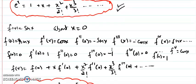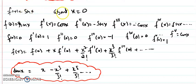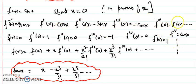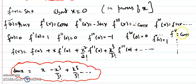Similarly, for the trigonometric sine function: f(x) equals sin x, f'(x) equals cos x, f''(x) equals minus sin x, f'''(x) equals minus cos x, and the fourth derivative is plus sin x, and so on. When we plug in x equals 0, f(0) equals 0, f'(0) equals 1 (since cos 0 is 1), f''(0) equals 0, f'''(0) equals minus 1, and the fifth derivative at 0 is 1.